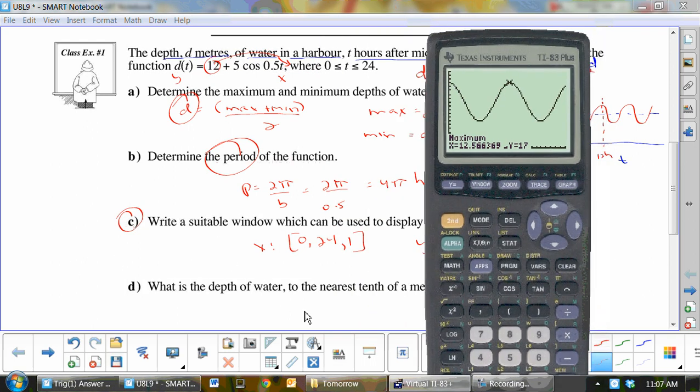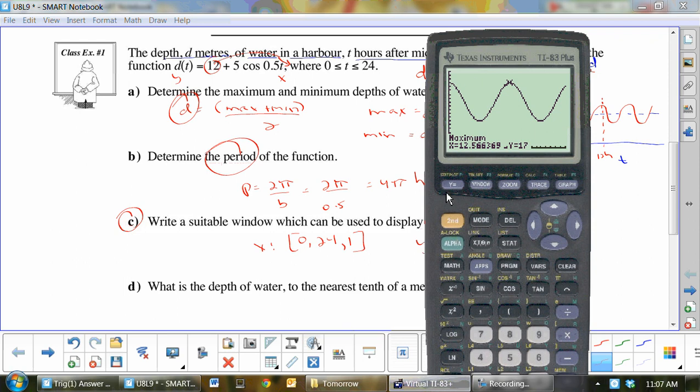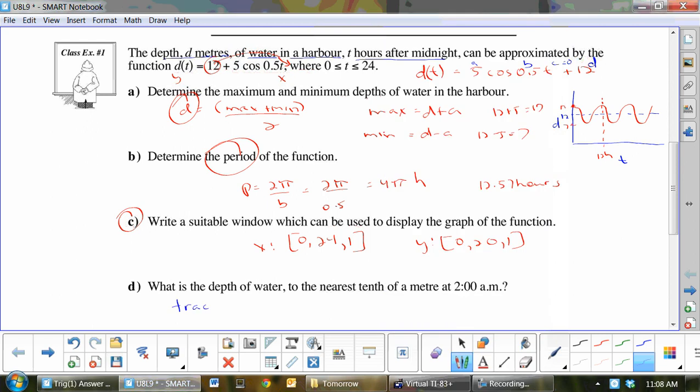What is the depth of water to the nearest tenth of a meter at 2am? Where's 2am? What would x be? 2. So all you do is hit trace to enter. At 2am, the height is 14.7 meters. How do we do that? Go trace to enter. And you get 14.7 meters.